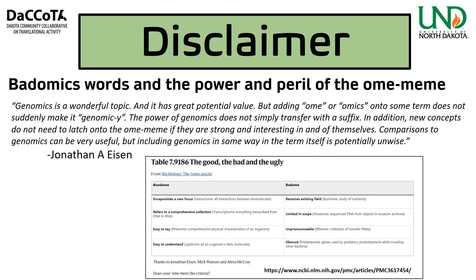Another great resource from PubMed talks about what's a good omics and what's a bad omics. Good ones have a new focus, refer to a comprehensive collection, are easy to say and understand. Bad ones rename an existing field, are limited in scope, unpronounceable, or obscure — for example, 'predestome' or 'nutriomics,' where we could just say 'the study of nutrients.'